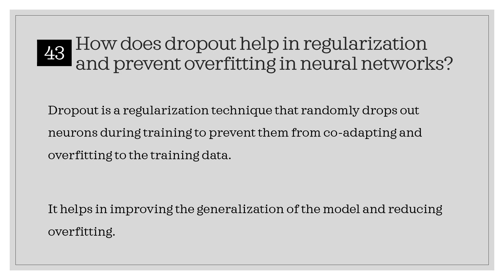How does dropout help in regularization and prevent overfitting in neural networks? Dropout is a regularization technique that randomly drops out neurons during training to prevent them from co-adapting and overfitting to the training data. It helps in improving the generalization of the model and reducing overfitting.